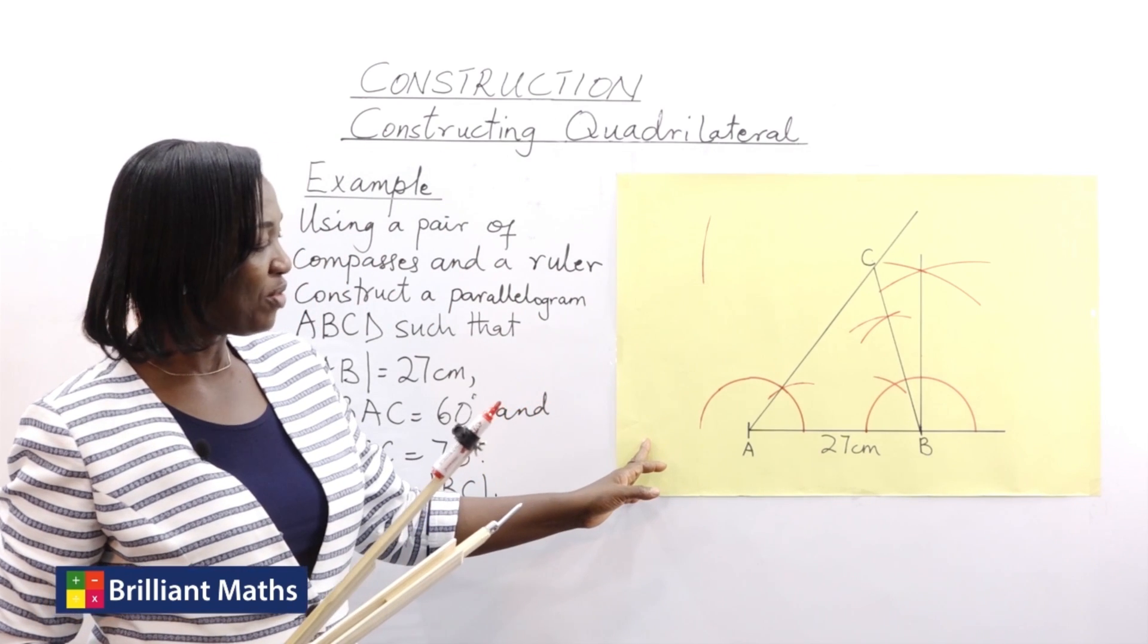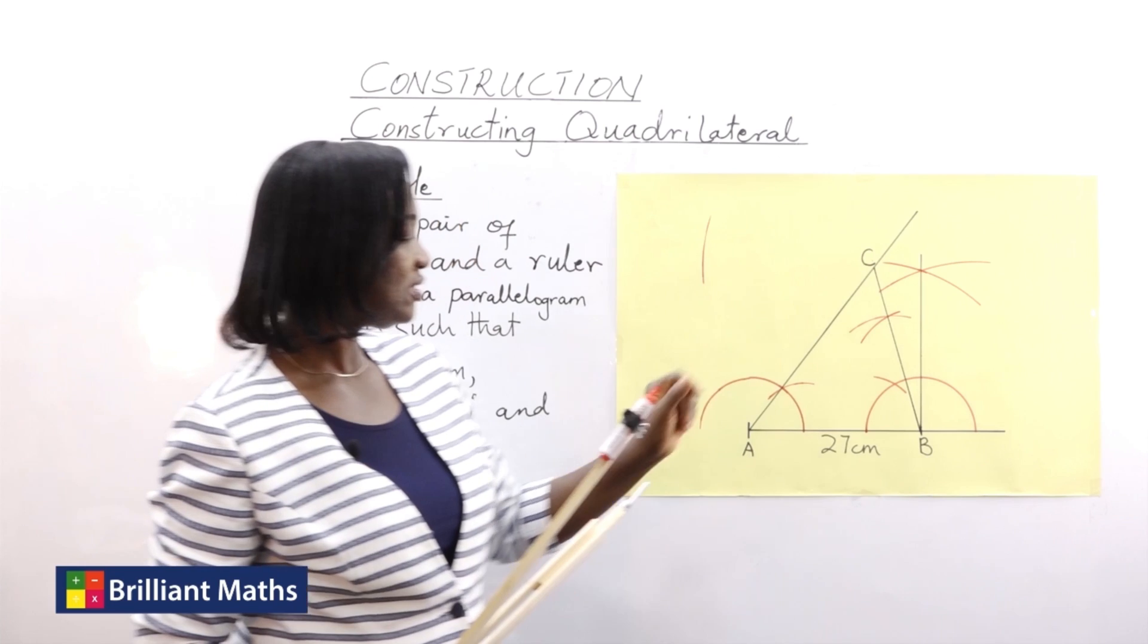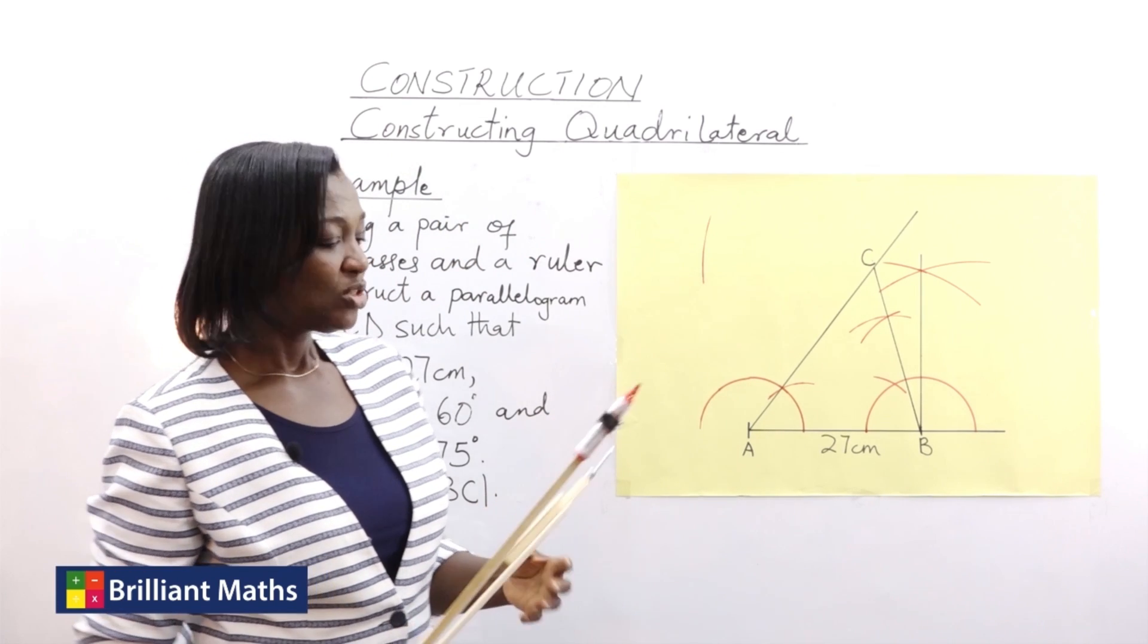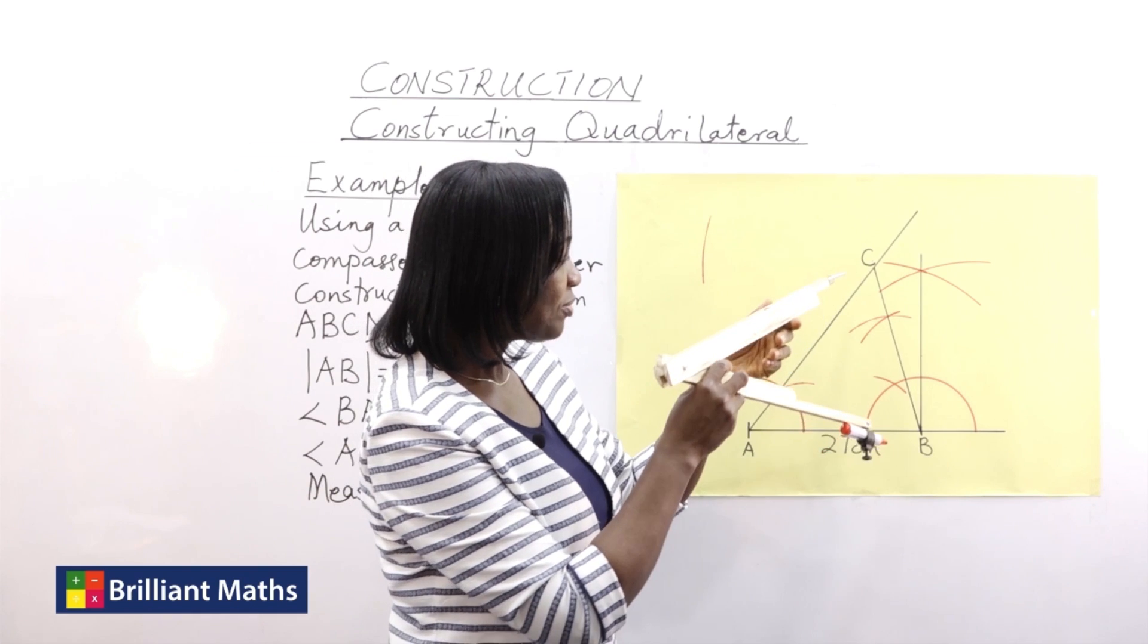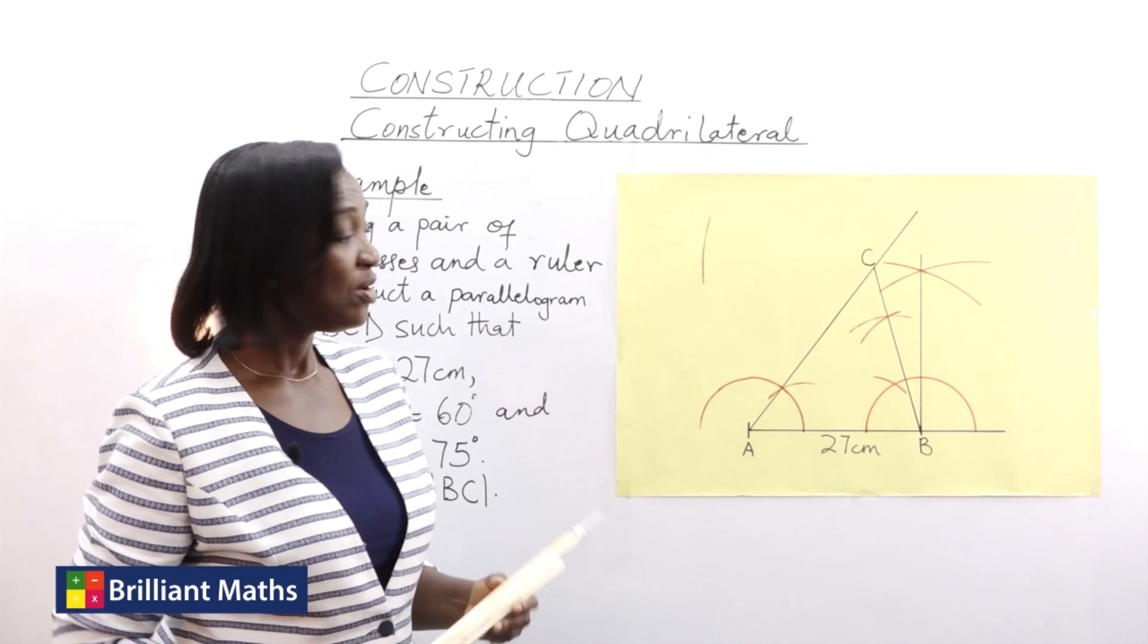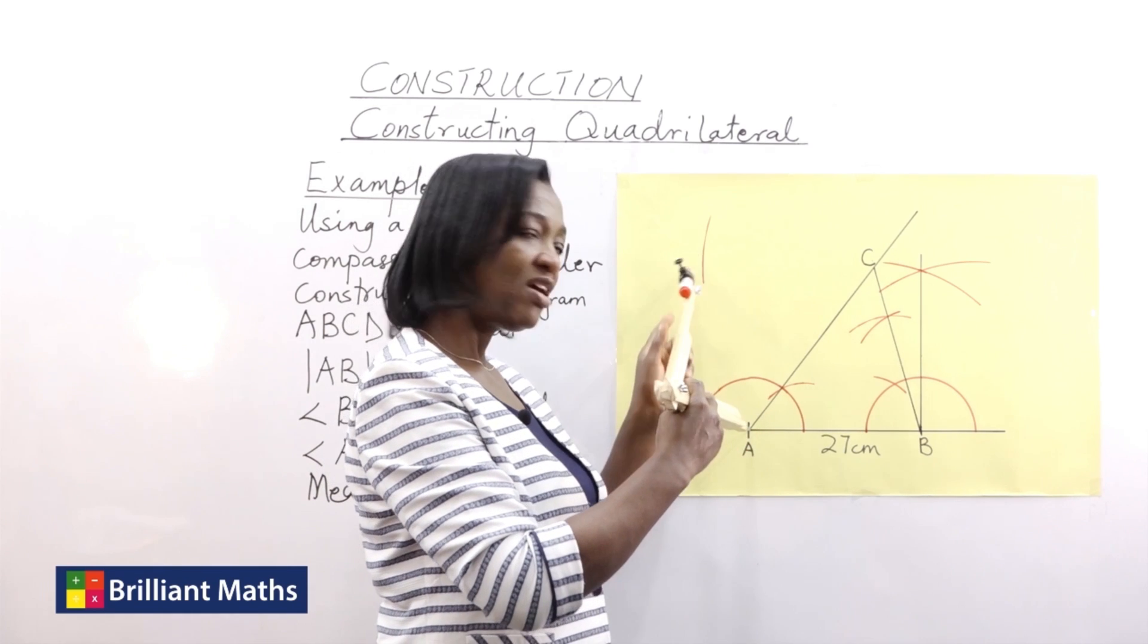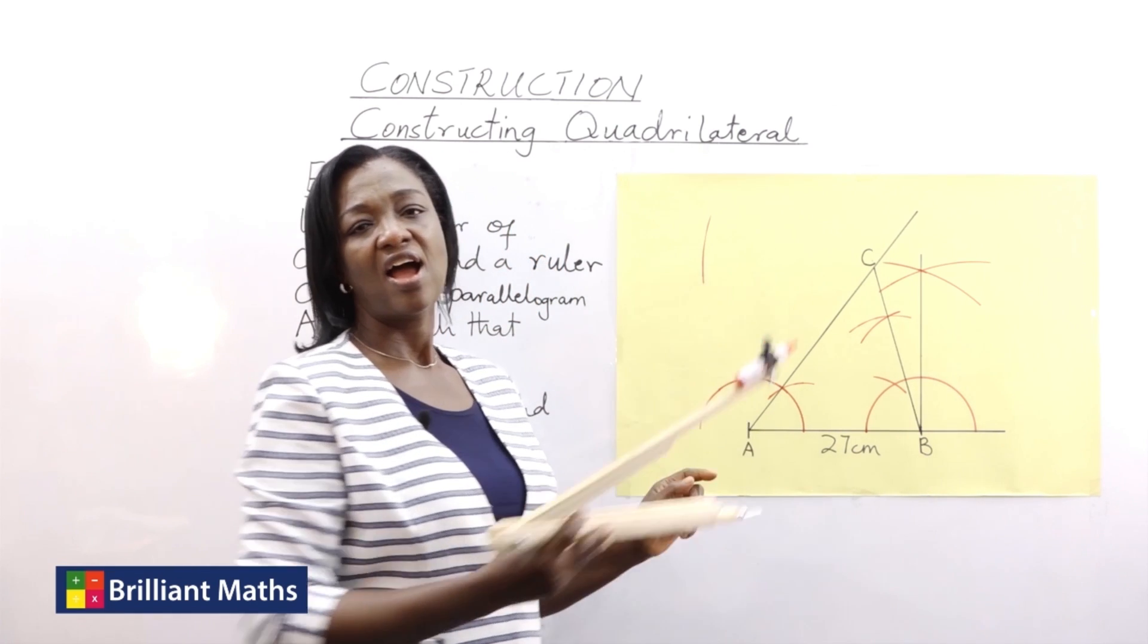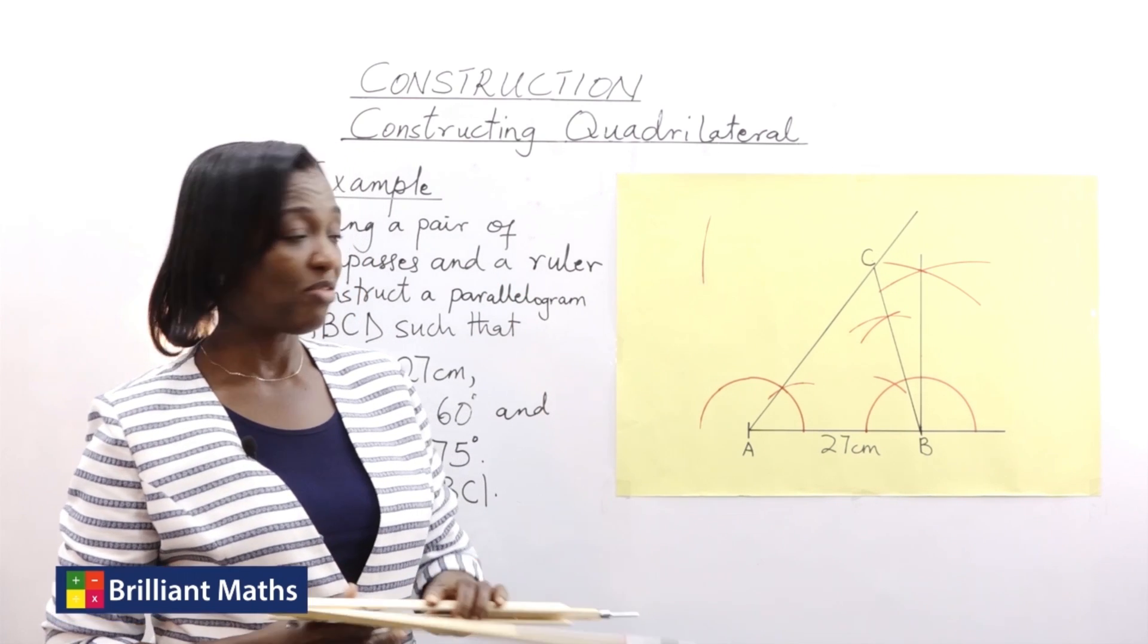The final arc will be the length of BC. So I use my pair of compasses to capture that length and then put it at point A and strike an arc